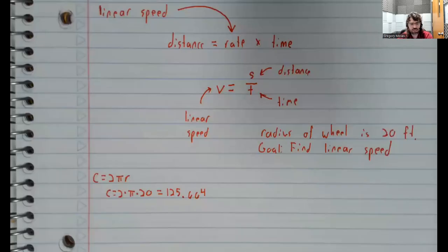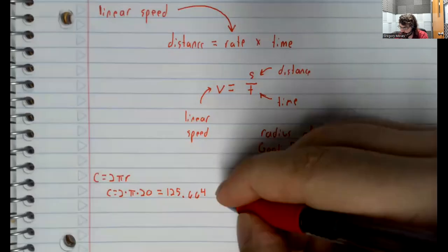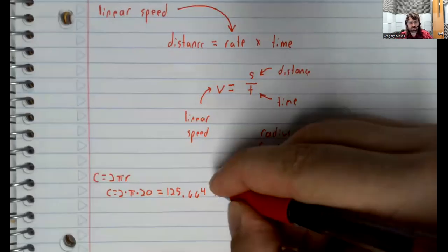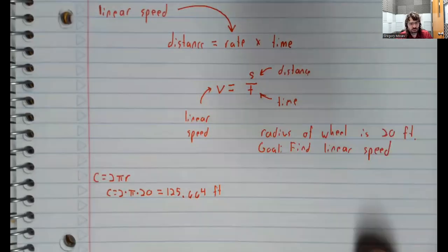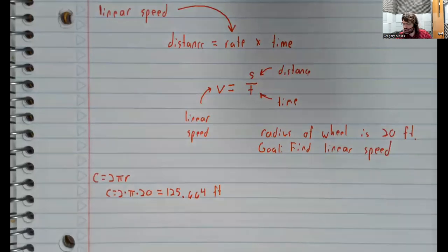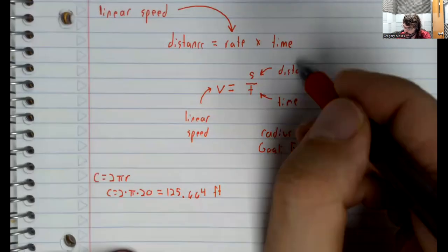So, in this particular case, with the radius of 20, the circumference is about 125.664 feet. And now we will plug and play with our formula.